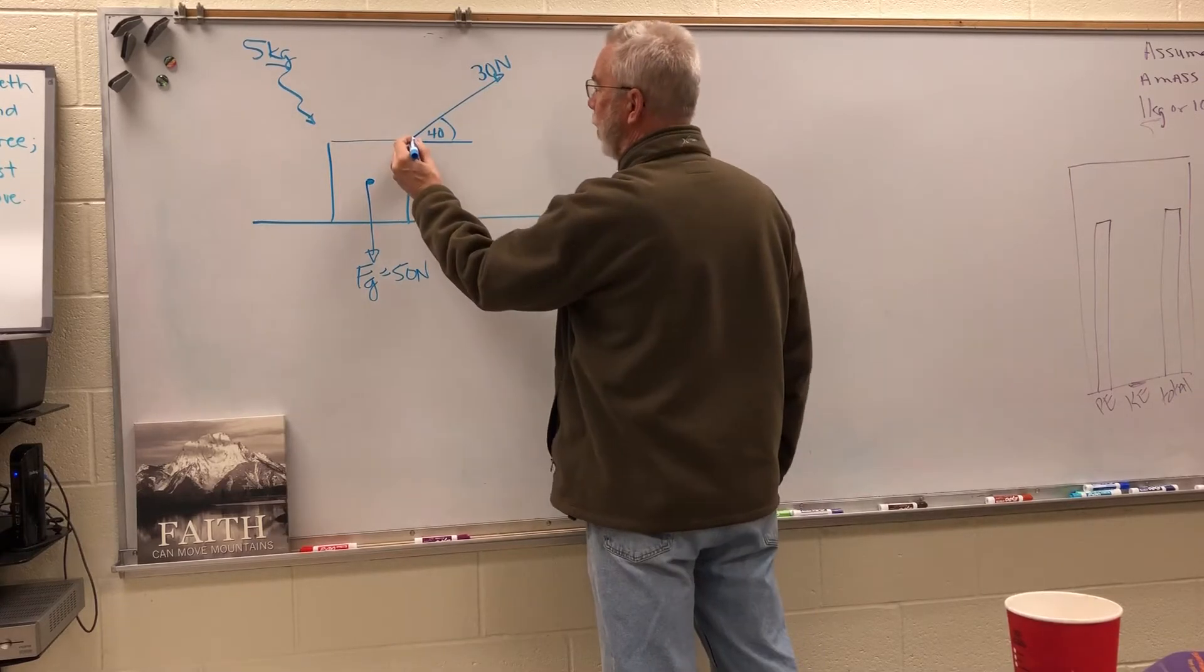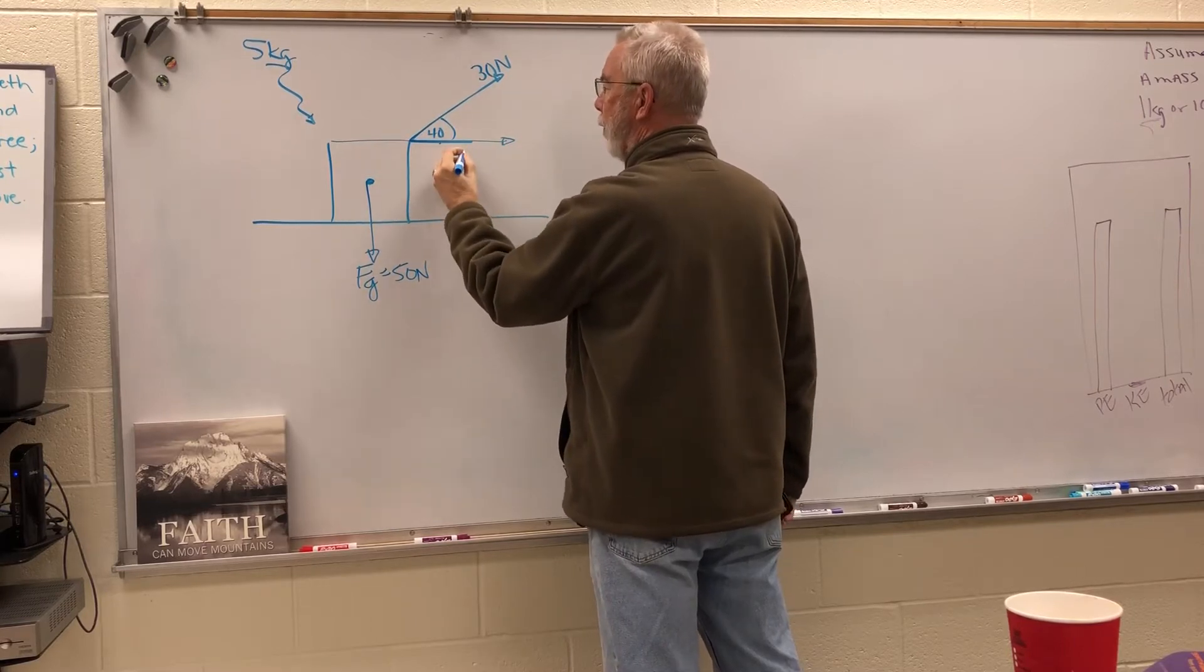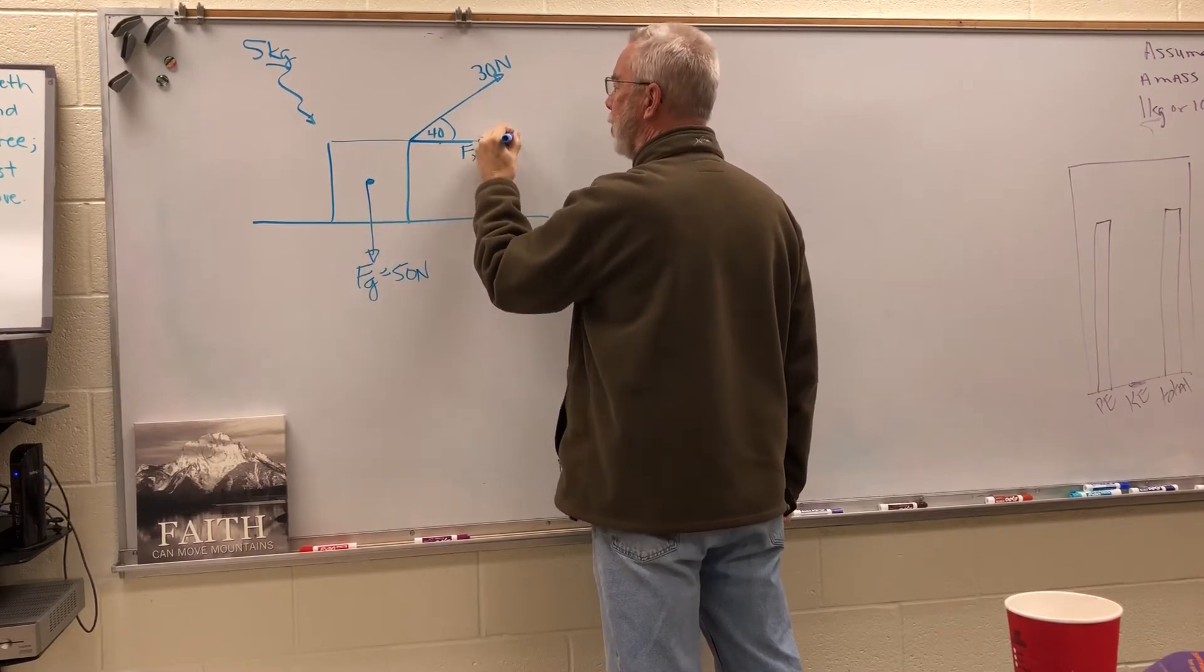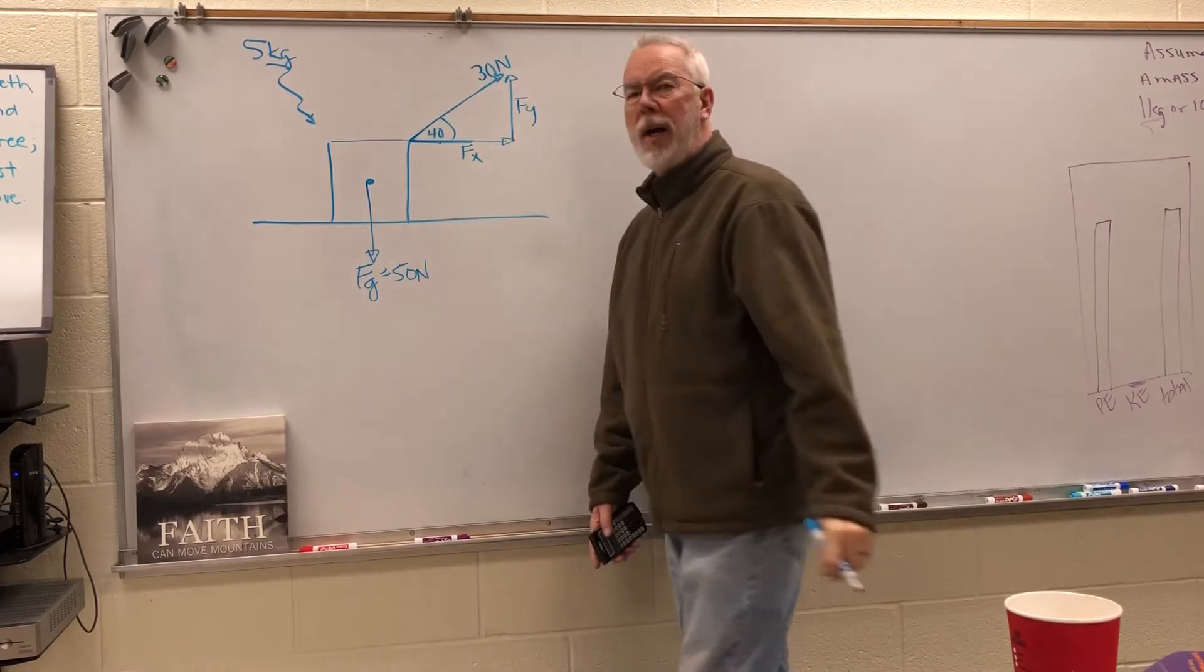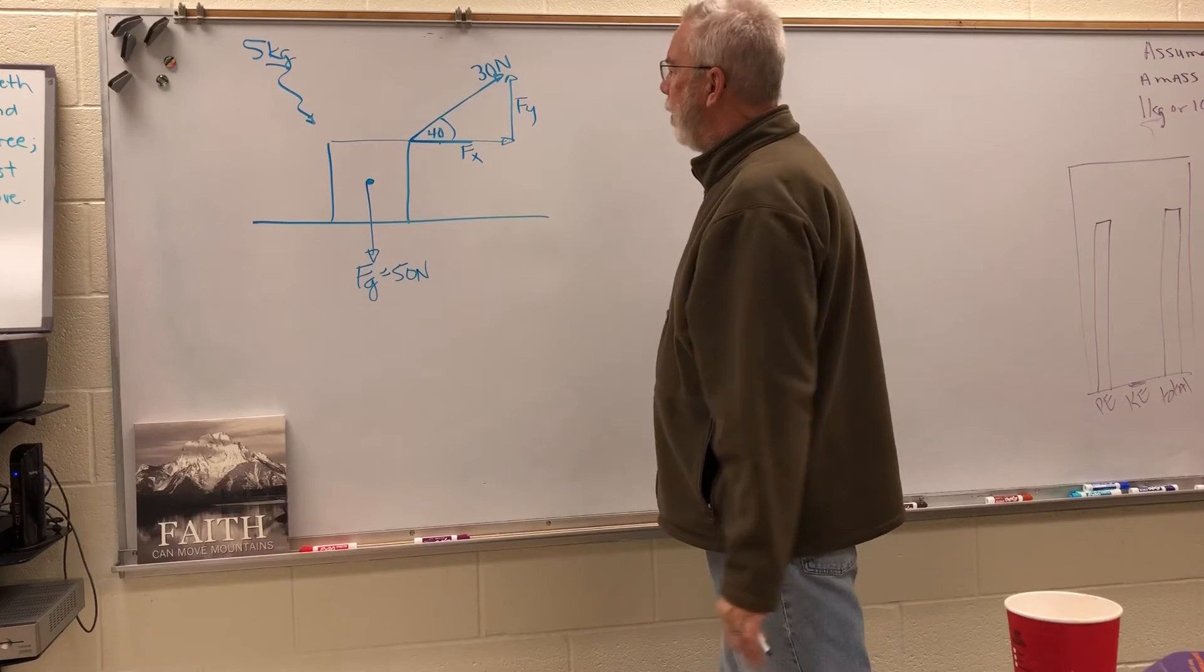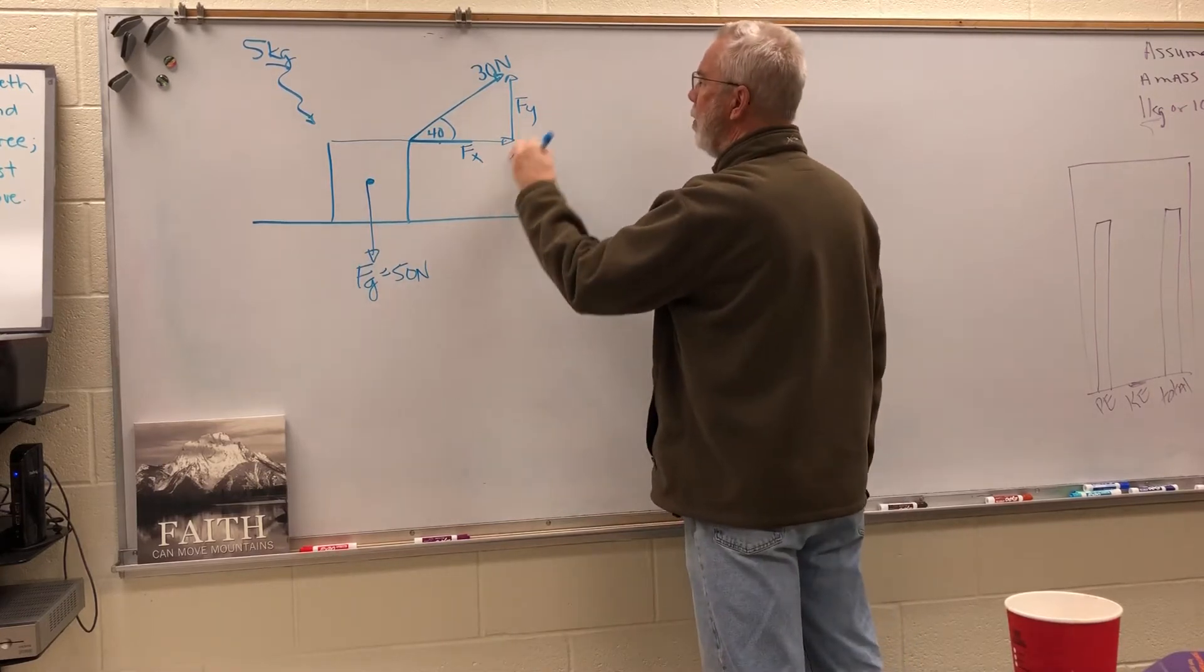Let's show how we find that. First of all, when this vector here is going off at a 40 degree angle, we have a horizontal force which we're going to call F of x, and we have a vertical force that we're going to call F of y. We can solve that a couple of different ways.